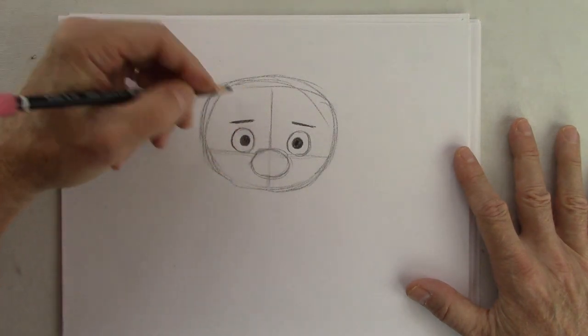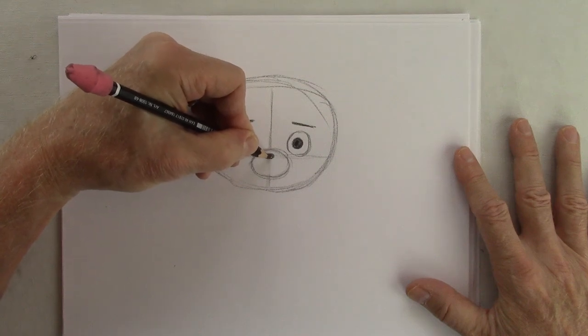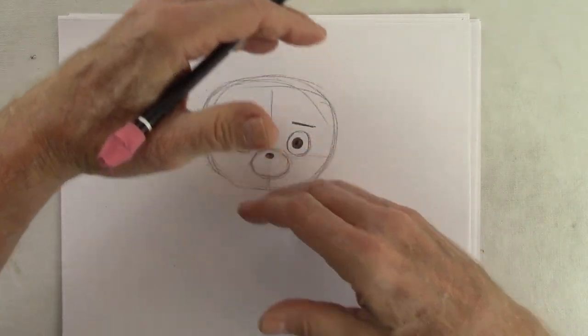And now have a nose close to the eyes but small, and the reason it's close to the eyes is because his face hasn't kind of like grown yet. He's small so it hasn't kind of widened into an adult.